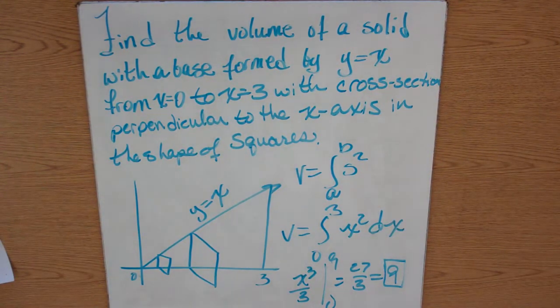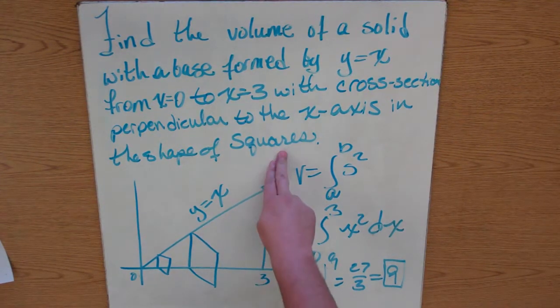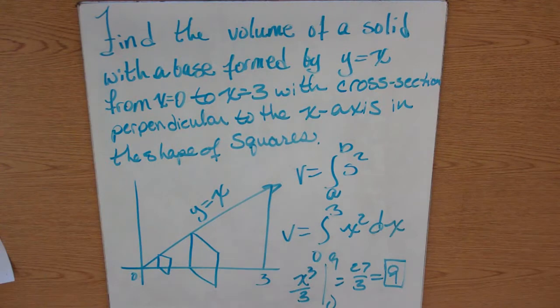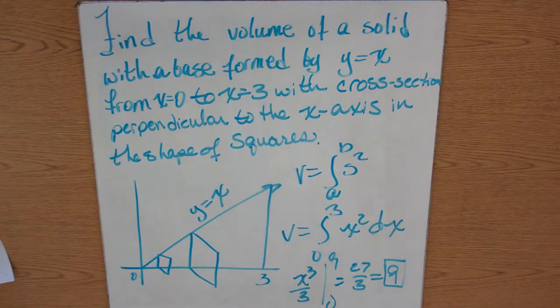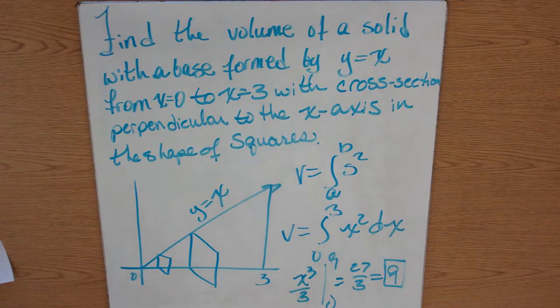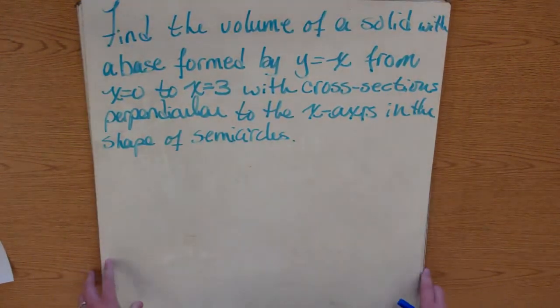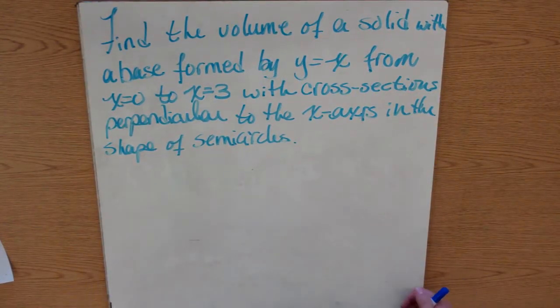So our area of our solid with cross sections in the shape of squares perpendicular to the x-axis from 0 to 3 of y equals x is 9. Let's look at one more example. Because remember, you do these the same way, you're just using your new formulas now.